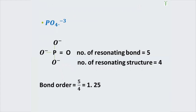The next example is PO₄³⁻. First we draw the structure. Resonating bonds are the bonds directly attached to the central atom — there are 5 bonds attached. For resonating structures, count the atoms directly attached to the central atom — there are 4. So bond order = 5/4 = 1.25.